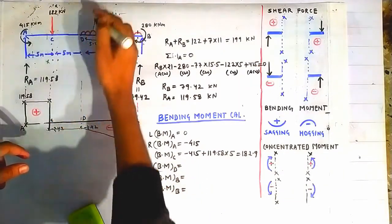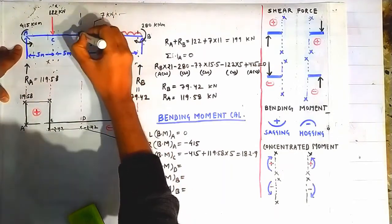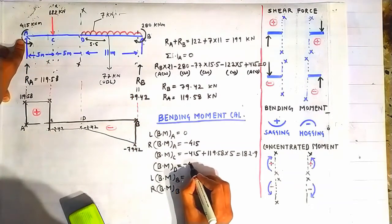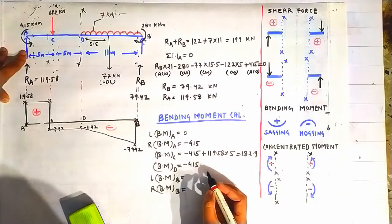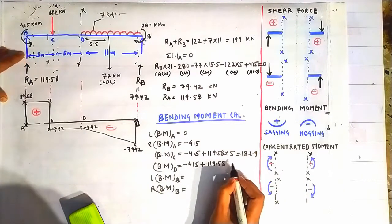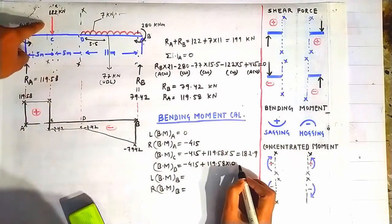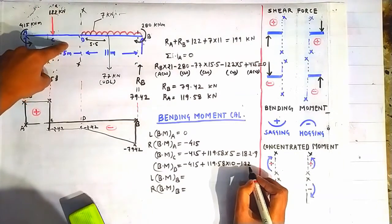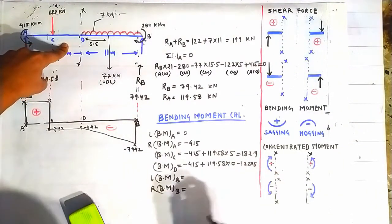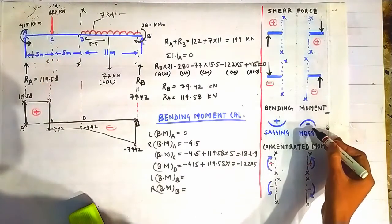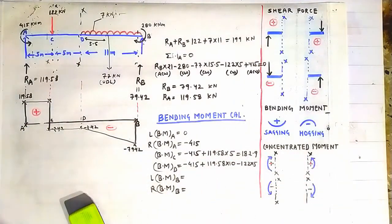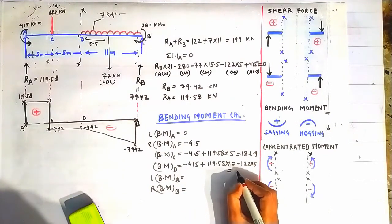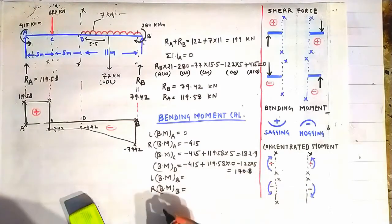For bending moment at point D, construct a section through D and look at the left side. The concentrated moment contributes −415 kN·m, reaction RA contributes +119.58 × 10 = +1195.8 kN·m, and the point load of 122 kN contributes −122 × 5 kN·m (hogging, taken as negative). The calculated bending moment at D comes out to be 170.8 kN·m.